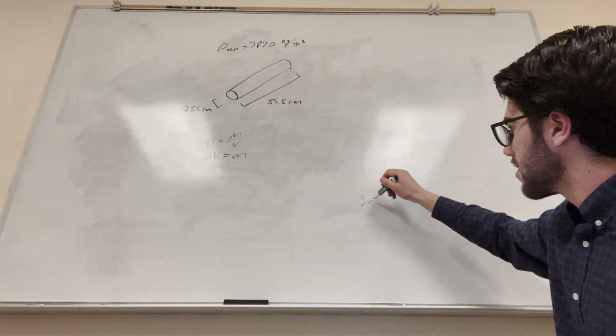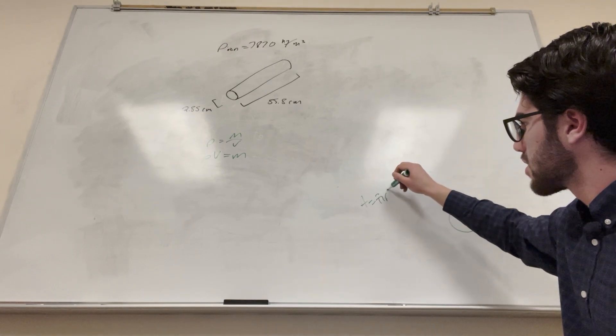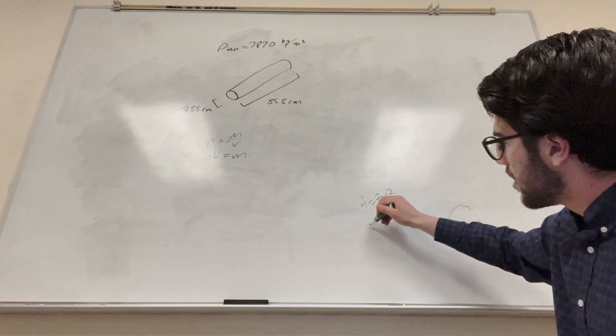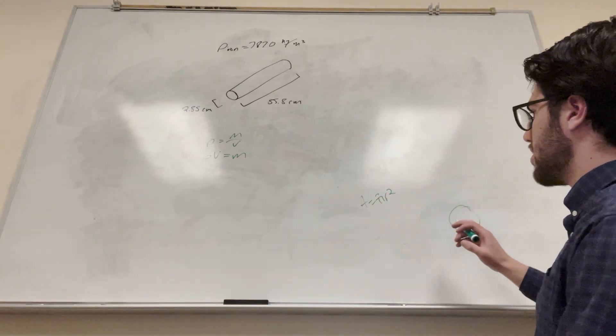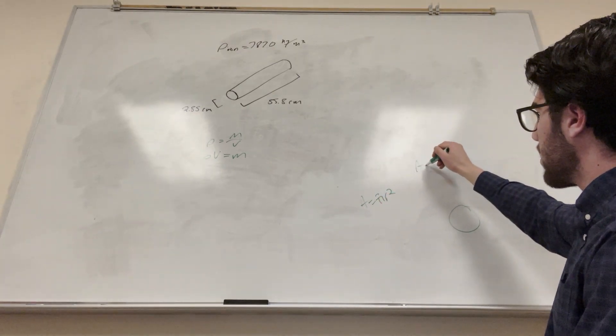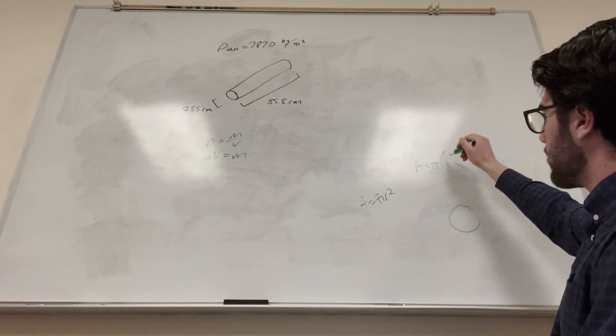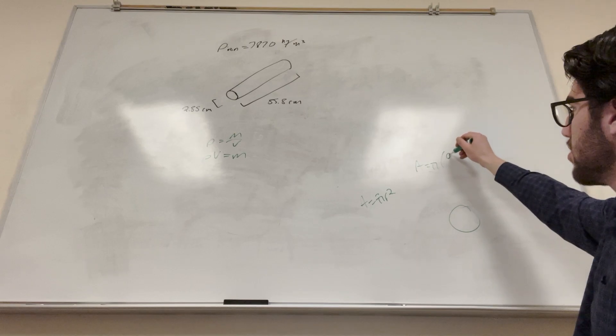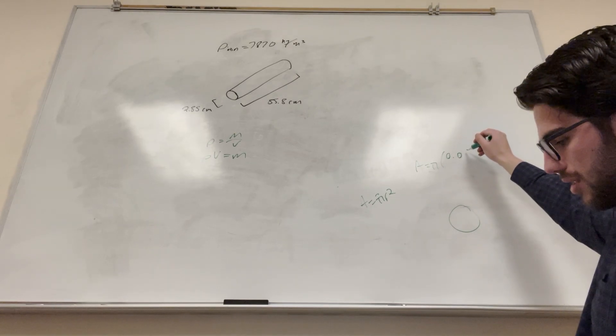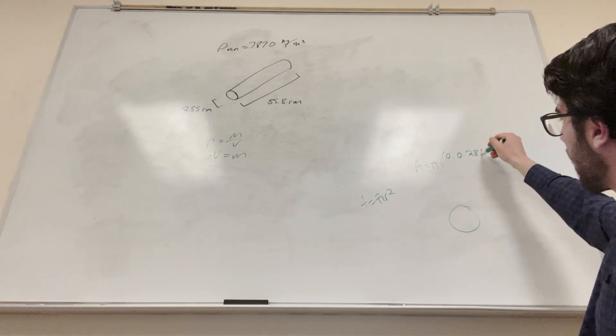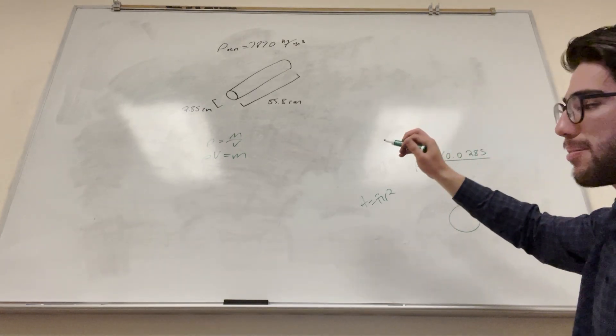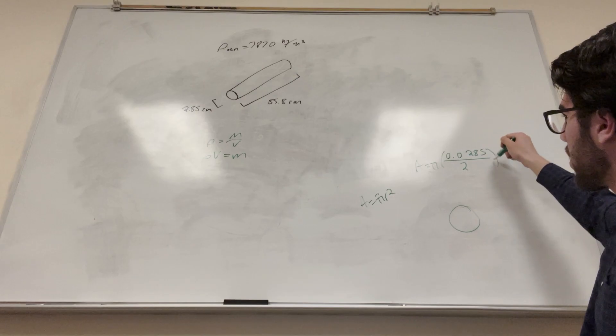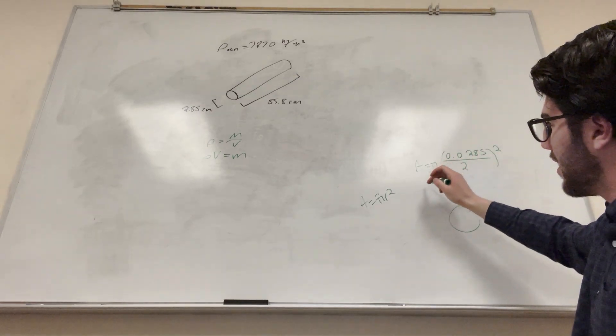So area is equal to pi radius squared, and we know that its diameter is 2.85 centimeters, so we're gonna need to divide diameter by 2 to get radius. So area is equal to pi times radius. We're gonna need to convert that to meters, so it's gonna be 0.0285 meters, but then we divide it by 2 to get the radius. So this is the radius, square the radius, multiply it by pi, and you're gonna get this area.